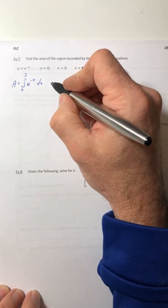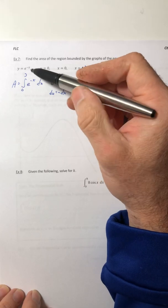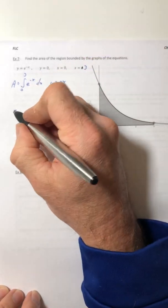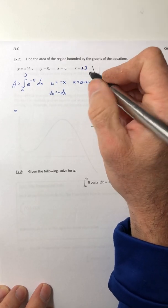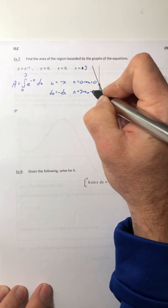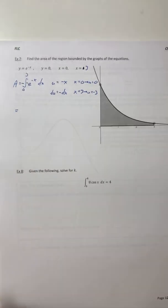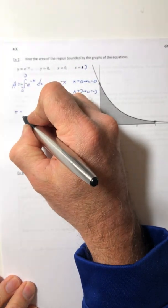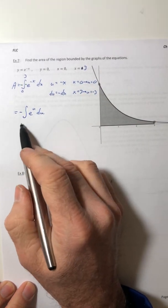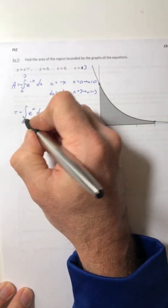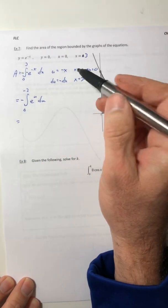So with this, we need a u sub. So u equals negative x, so the du would be negative dx. And this one is going to be simple to switch out. So let's just go ahead and switch out the bounds. So when x is 0, u is also 0. And when x is 3, u is negative 3. And I also need a negative inside and outside. You didn't have to go this route if you didn't want to, but for me, it was easy to switch the bounds, so I just switched them.